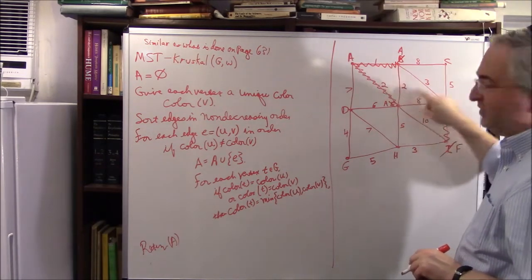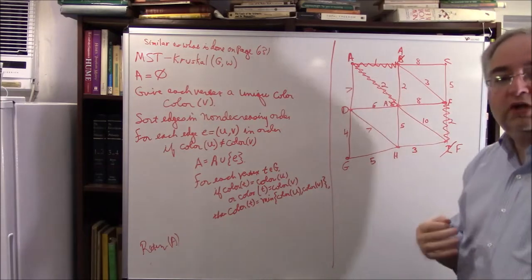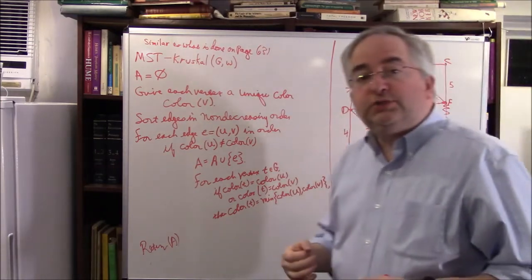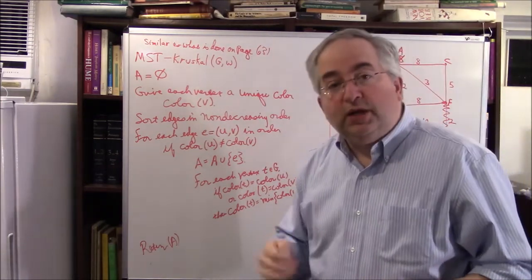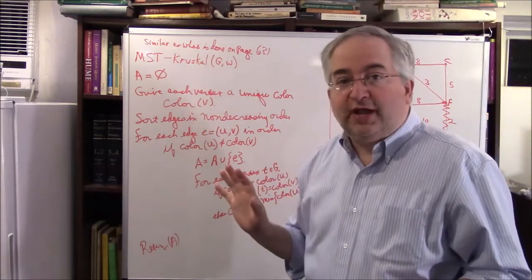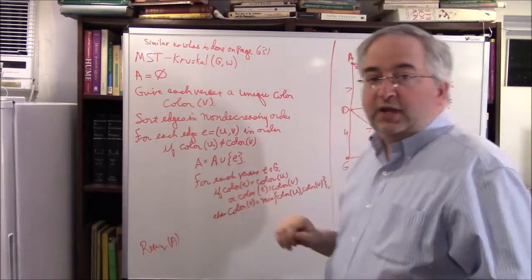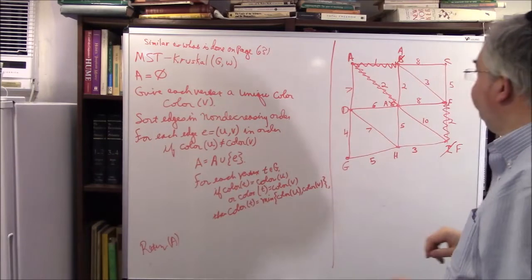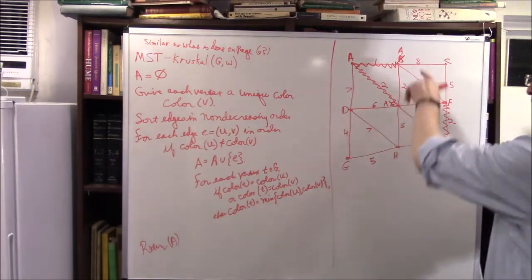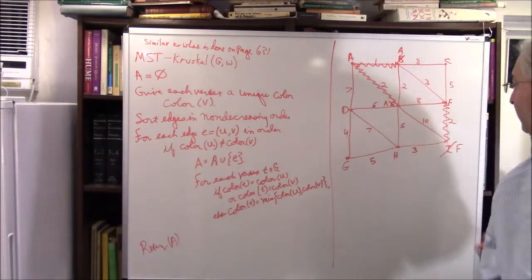Now we would have a cycle. We're looking for a minimum spanning tree — no cycles allowed. So we can't add that edge. We're not going to do that. Next, something of weight 3.